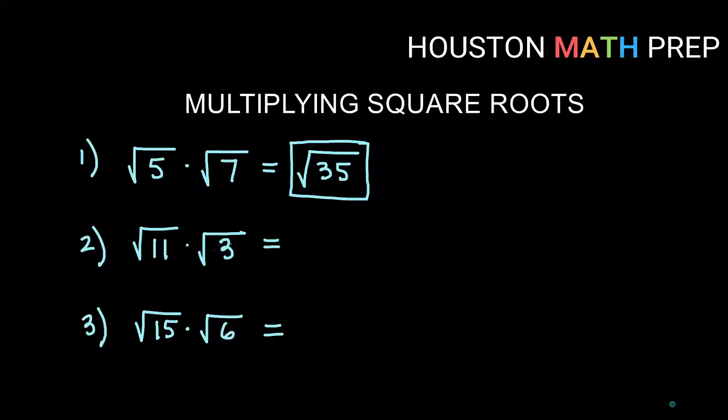Here we have square root 11 times square root 3 for the second one. So both things are underneath the root. They multiply together. So 11 times 3 will give us 33. So square root 33 is our answer.